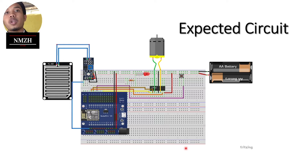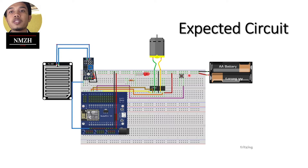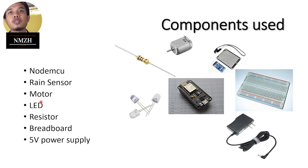The circuit includes a motor driver for the motor, an LED as an indicator with a resistor, a button, an external power source, and a rain sensor for detecting rain. The components also include a breadboard as the base and a 5-volt power supply.